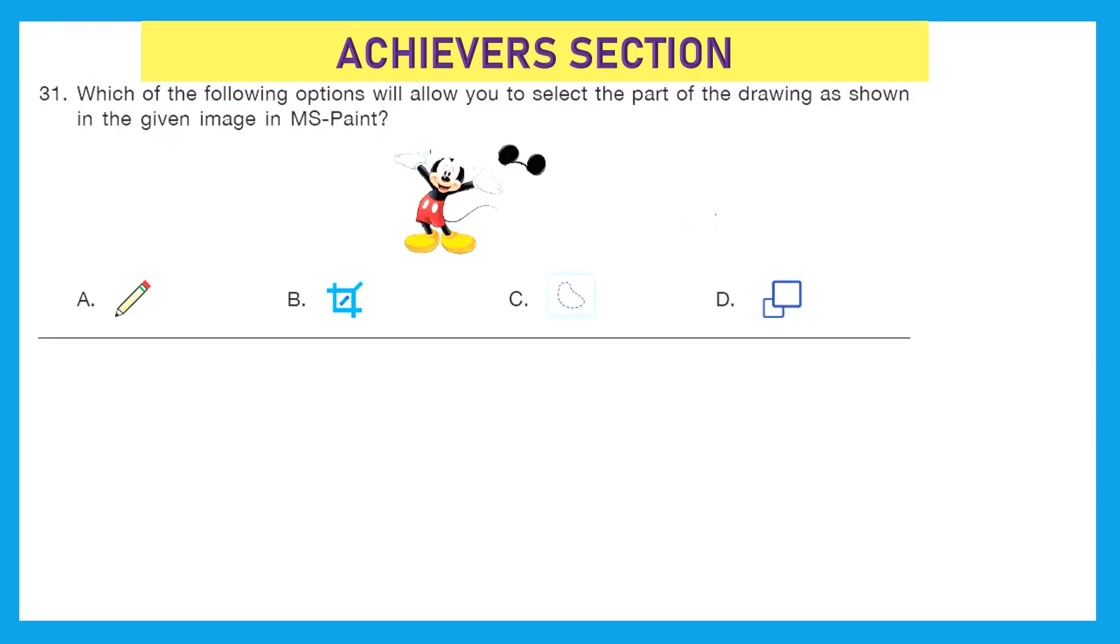Moving to the last section that is achievers section and it holds double marks for each question. Question 31: Which of the following options will allow you to select the part of the drawing as shown in the given image in MS Paint? So with which option we will be able to select the part of the drawing? If we have to select some portion of this drawing and the right answer is option C. This allows us to select the part of the drawing given in the MS Paint.